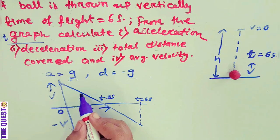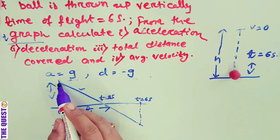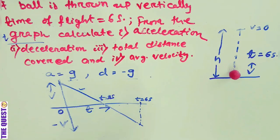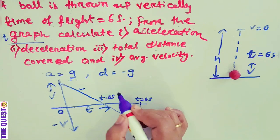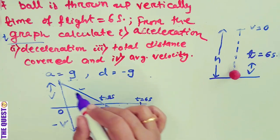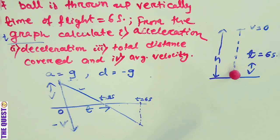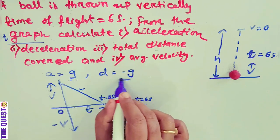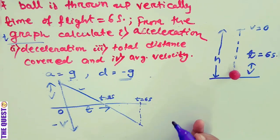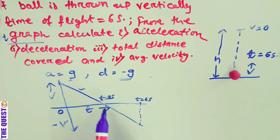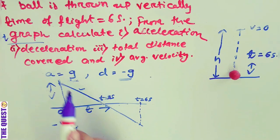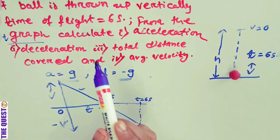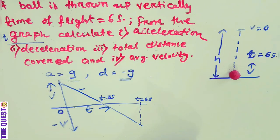We can calculate the acceleration from the graph. As the body moves under the force of gravity, the slope of the line during upward motion will be equal to minus g, since the body is decelerating. During downward motion, as the body is accelerating in the opposite direction, the slope will be equal to plus g. This gives us the acceleration and deceleration of the body. Now, what is the total distance covered?